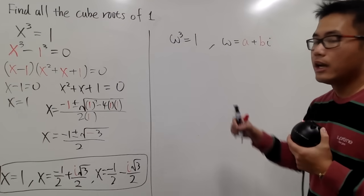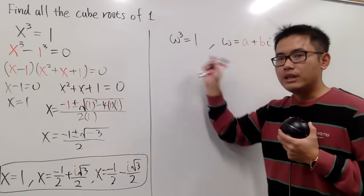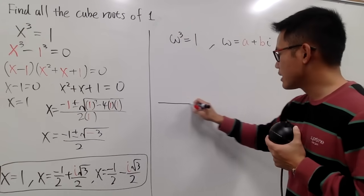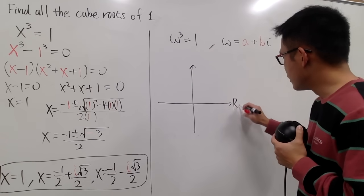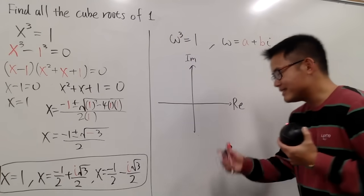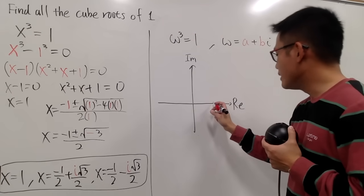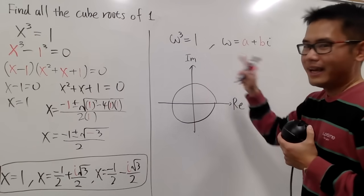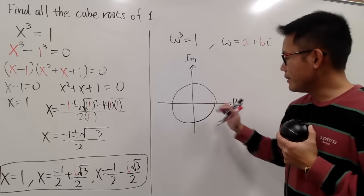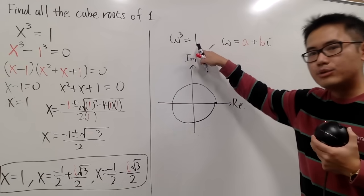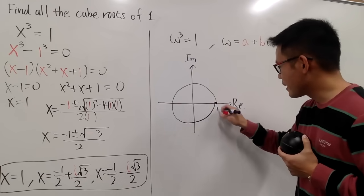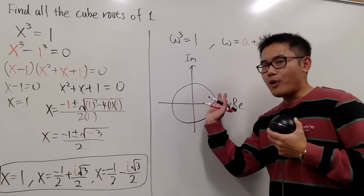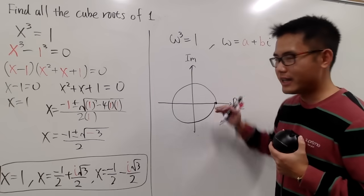I will be looking at the complex plane with the real axis and the imaginary axis. Omega to the third power equals 1, which suggests we look at the unit circle — a circle with radius 1. I want to end up with 1, which is 1 plus 0i, the point on the real axis. Starting there, I want to rotate three times and come back. A circle is 360 degrees divided by 3, which is 120 degrees each time.